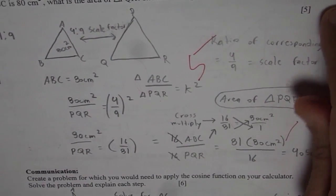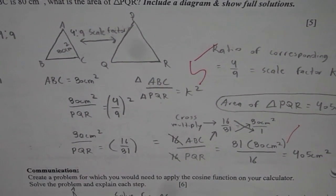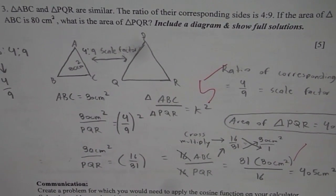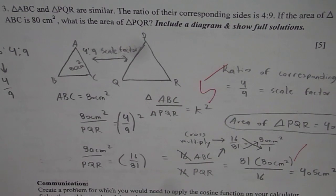So these are based on similar triangles. You can copy the question. It is triangle ABC and triangle PQR are similar. Ratio of their corresponding sides is 4 is to 9. If the area of triangle ABC is 80 cm square, what is the area of triangle PQR?